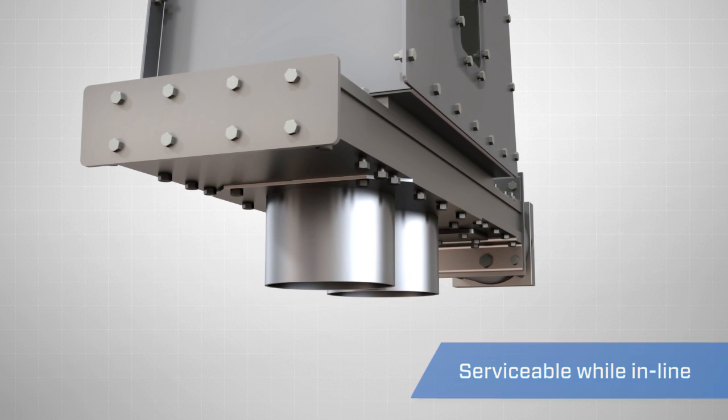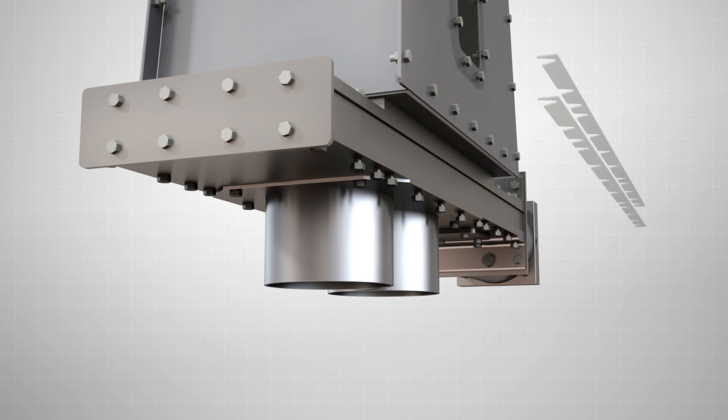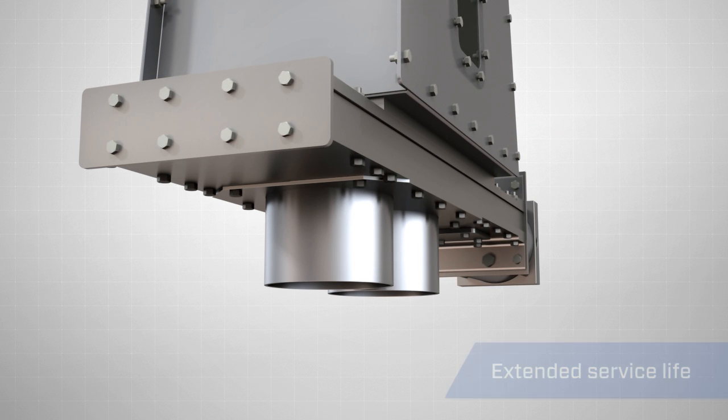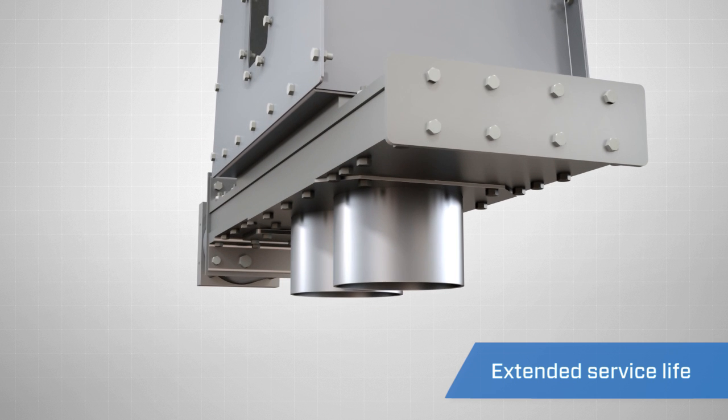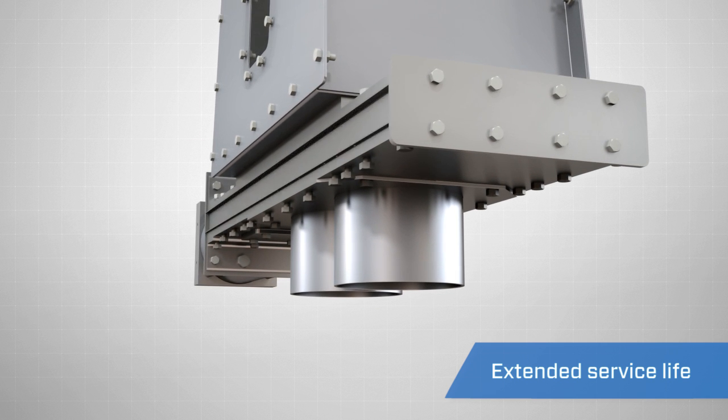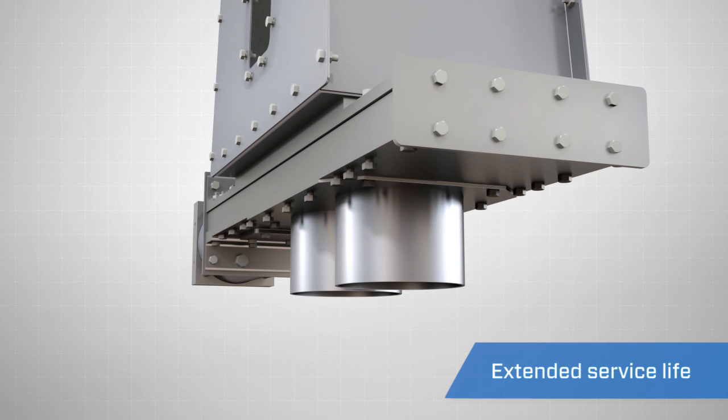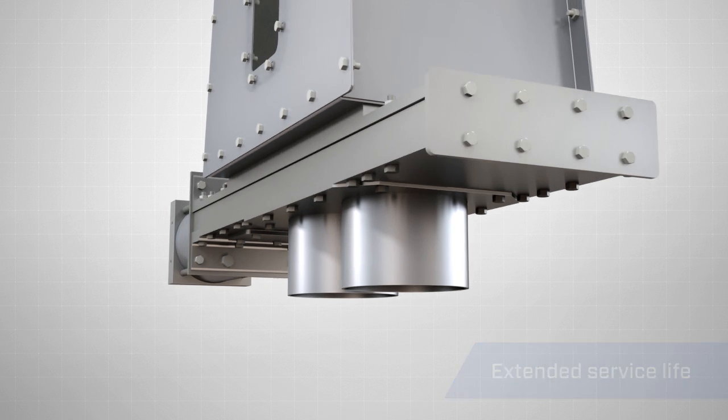Simply loosen the bolts along each side of the unit and remove a shim. After re-tightening the bolts, the diverter will seal as if it were new again. This process significantly extends the life of the valve and reduces your downtime.